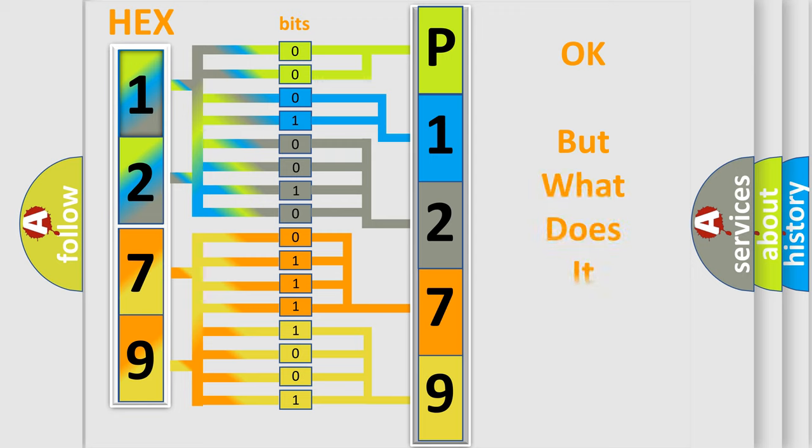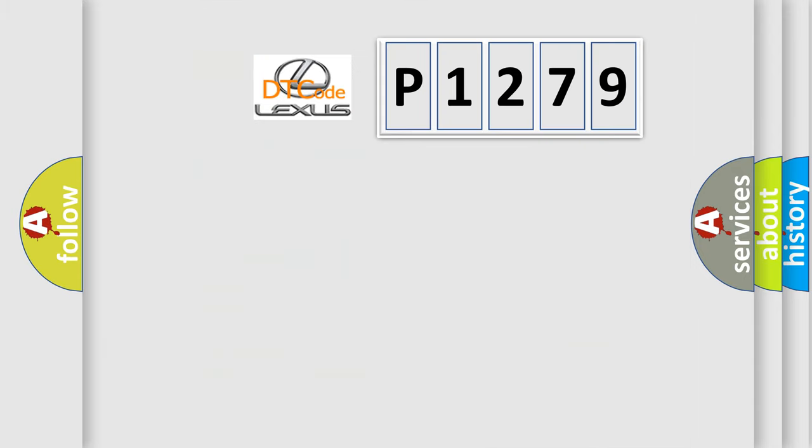We now know in what way the diagnostic tool translates the received information into a more comprehensible format. The number itself does not make sense to us if we cannot assign information about what it actually expresses. So, what does the Diagnostic Trouble Code P1279 interpret specifically for Lexus car manufacturers?